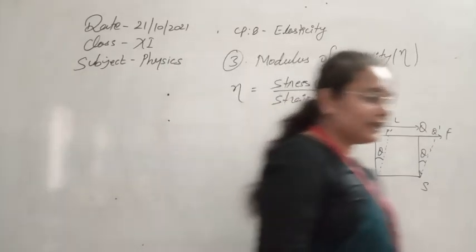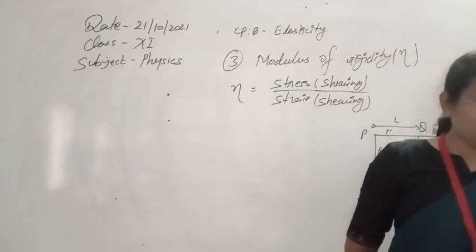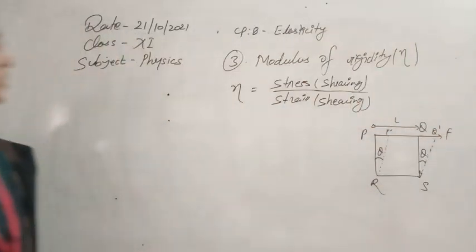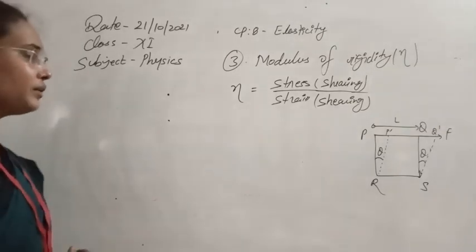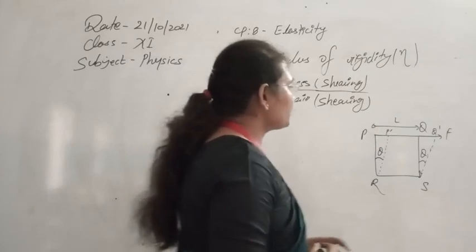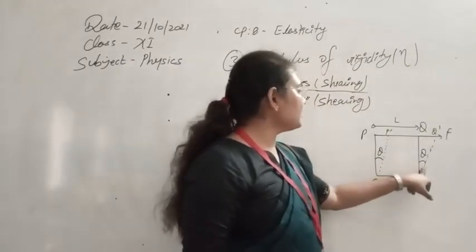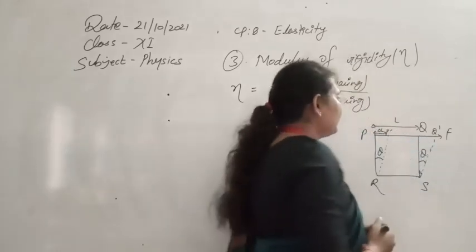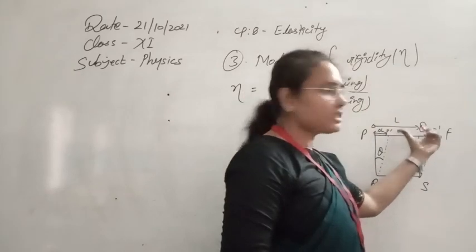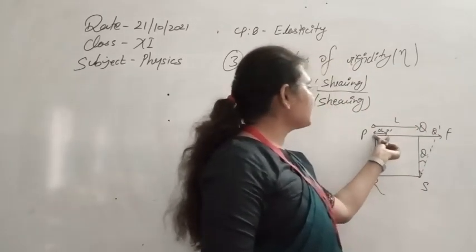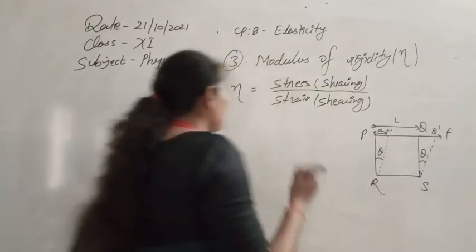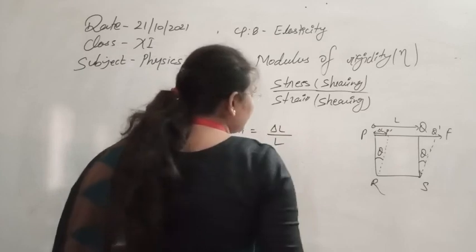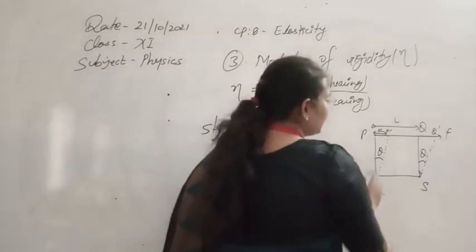So let's see how we calculate shearing stress and shearing strain in both cases. The shearing stress is calculated as force per unit area (F/A). The shearing strain can be expressed in the form of an angle, or also by the change in length. If the change that occurred is delta L, then the strain is given by delta L divided by L.